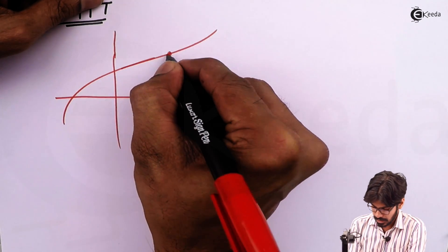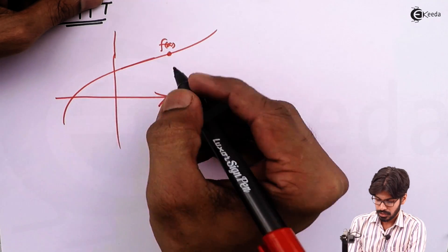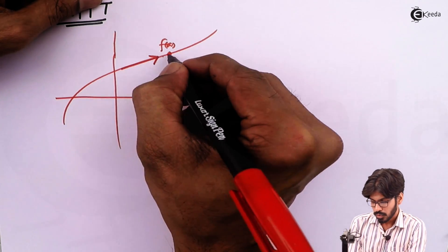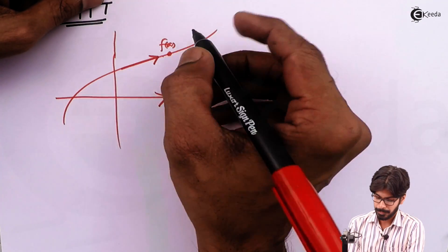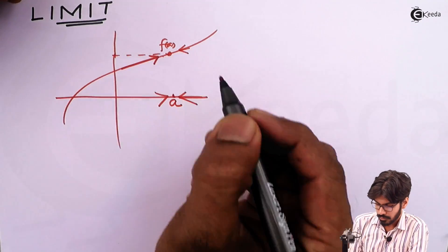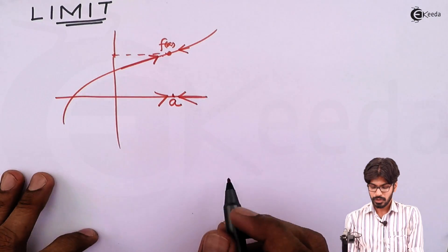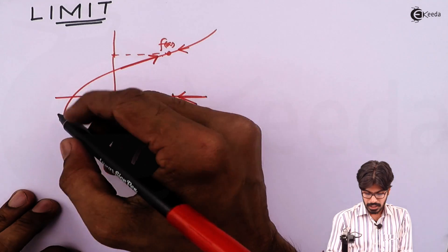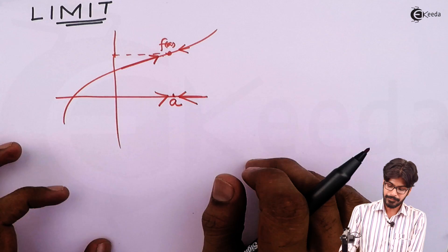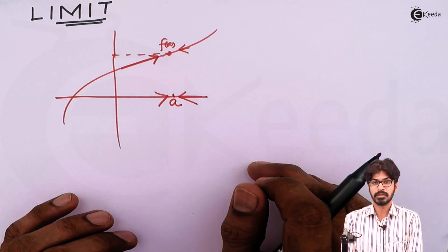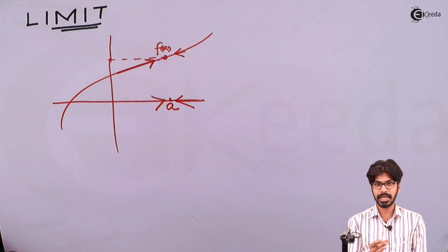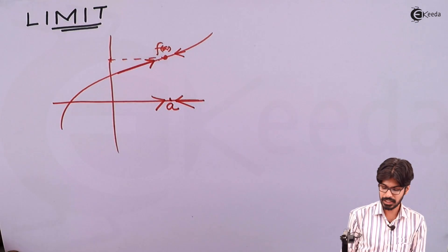The function approaches f of a from the left side as well as from the right side — it will approach the value f of a. Now here the function is continuous throughout the real numbers. But what will happen when we consider a function which is not continuous, or there is a break in the graph of the function?